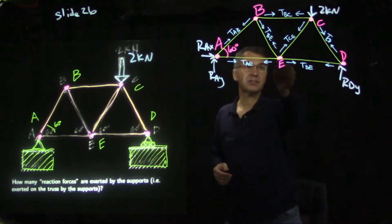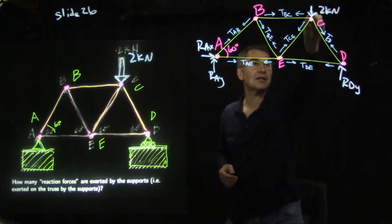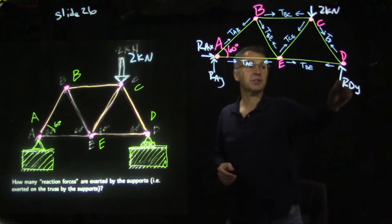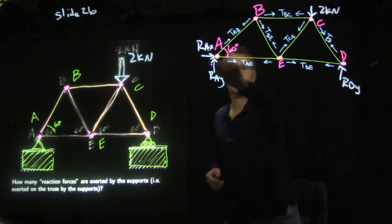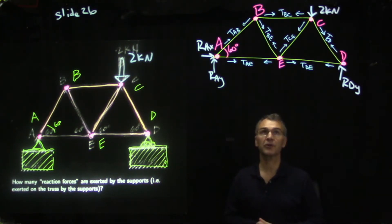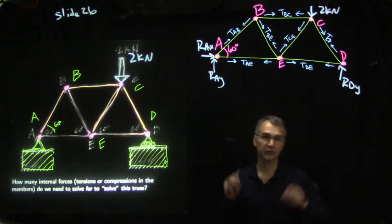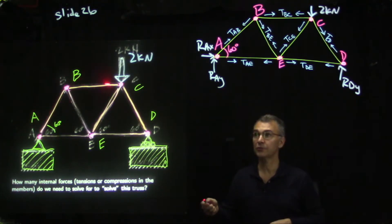We can anticipate that R-A-X will be zero because there are no other external horizontal forces, and R-A-Y plus R-D-Y will add up to two kilonewtons. R-D-Y will be larger because the load is closer to D than to A. All the angles are 60 degrees and all bar lengths are equal. Counting bars: one, two, three, four, five, six, seven — we have seven bars, so seven unknown bar forces.